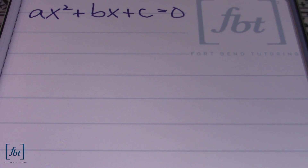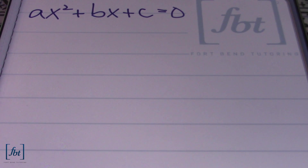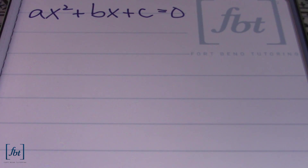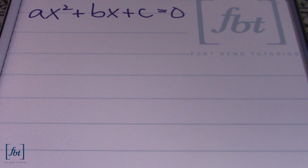One thing you should know about making a proof in mathematics is that you can't use what you're actually trying to prove in the process of proving it. In other words, I can't use the quadratic formula in order to prove the quadratic formula. So you're going to need another way to do it. The other ways to solve a quadratic equation include the zero factor property if it's factorable, or completing the square. Let's use completing the square and see if it ends up giving us the quadratic formula.